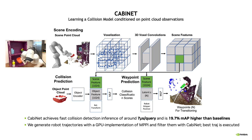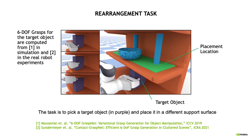Cabinet is also used to predict robot waypoints for transitioning in the rearrangement task. Using the Cabinet model, we generate robot trajectories using MPPI and execute the best trajectory on the robot for object rearrangement.